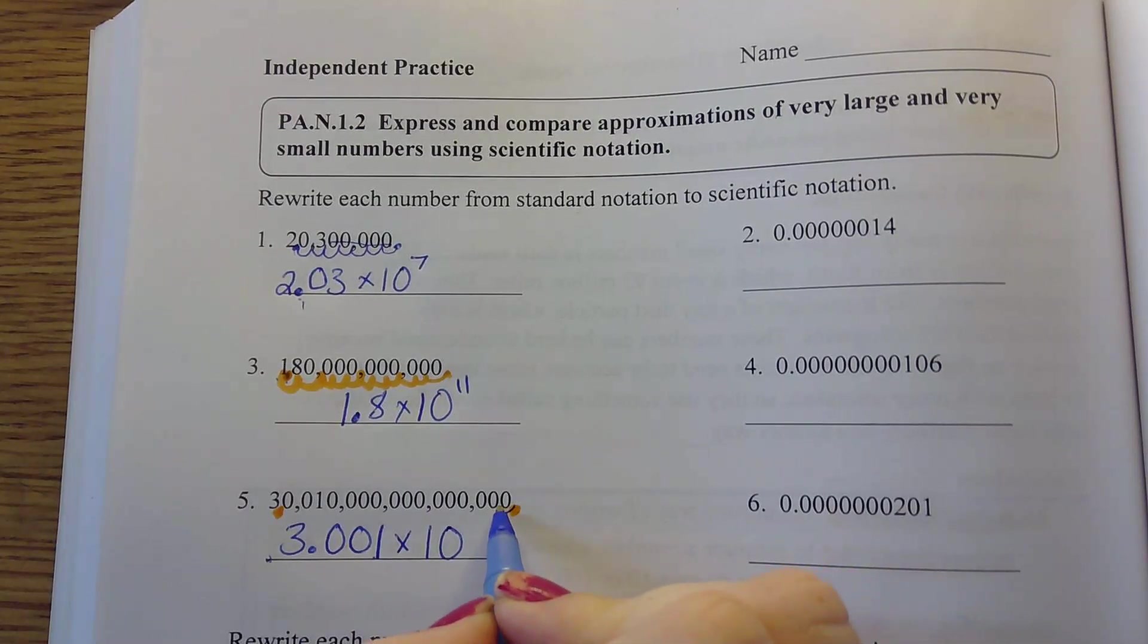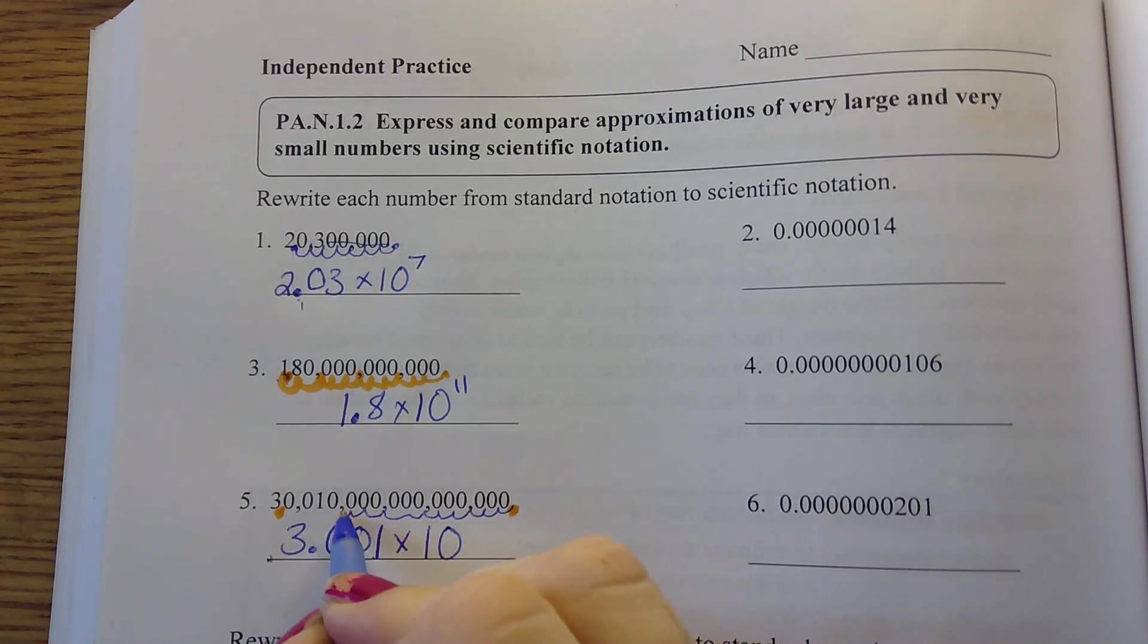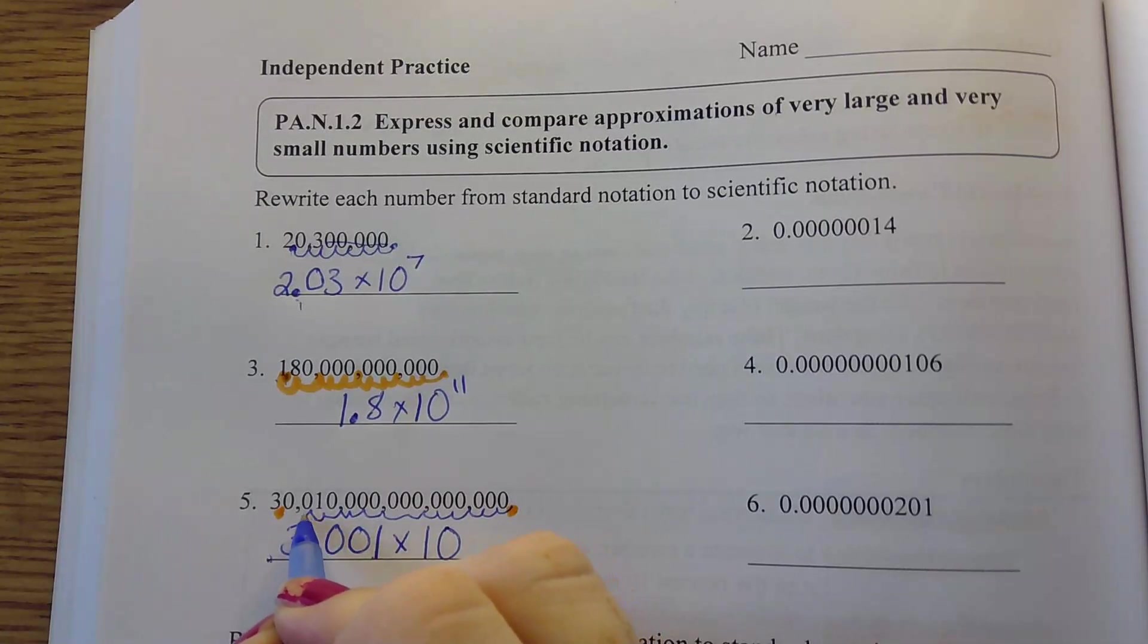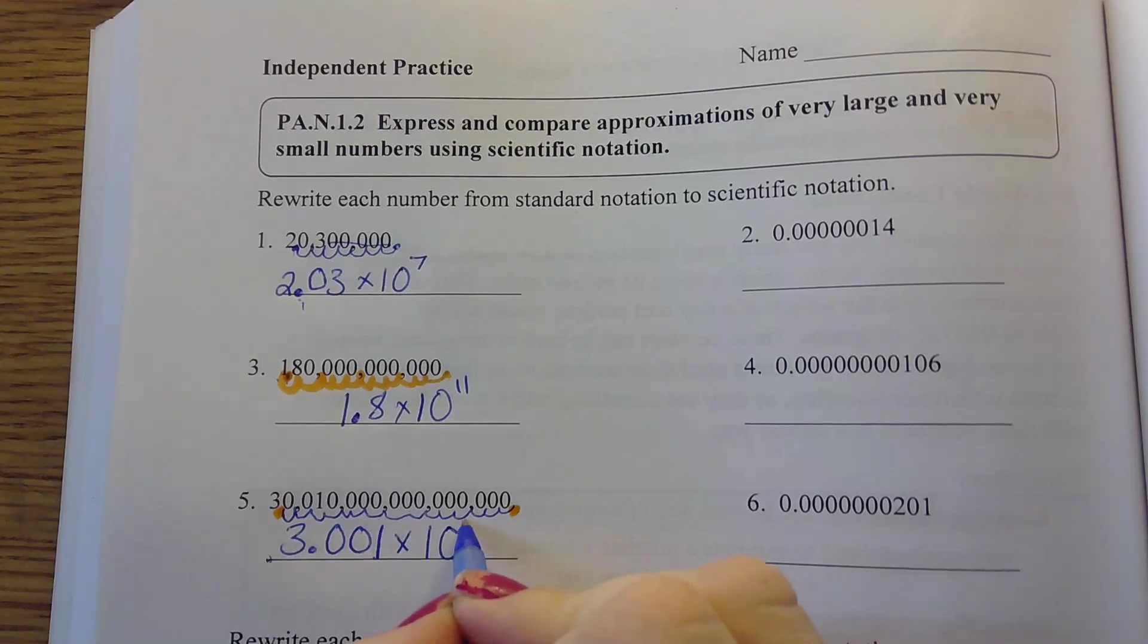Times 10, our base is always going to be 10 on these, to the what? 1, 2, 3, 4, 5, 6, 7, 8, 9, 10, 11, 12, 13, 14, 15, 16. So 10 to the 16th power.